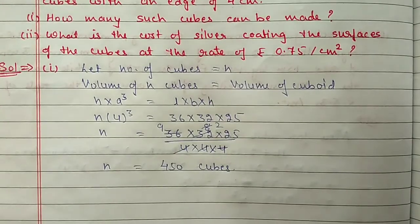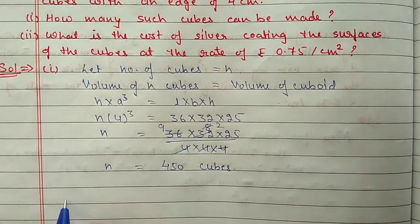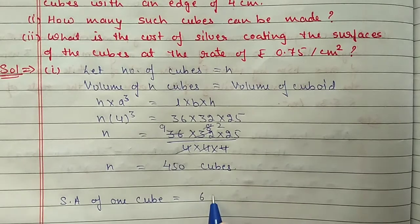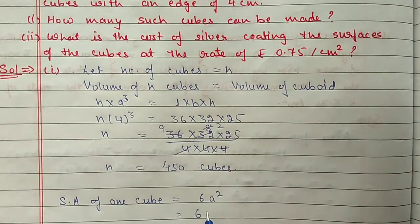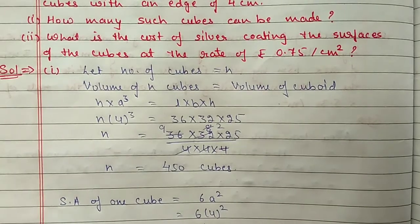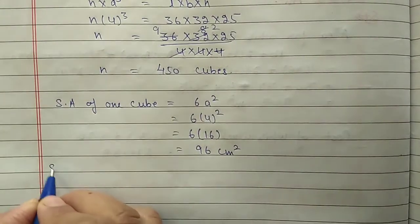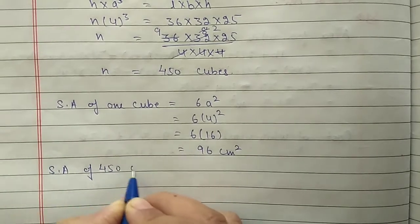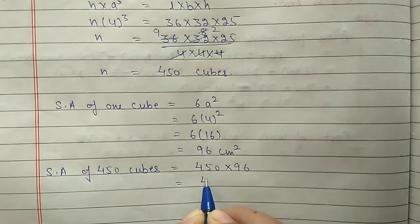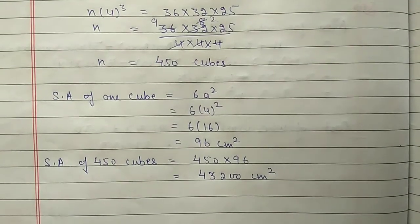For the second part, find the cost of silver coating. Surface area of one cube = 6a² = 6 into 4² = 6 into 16 = 96 cm². Surface area of 450 cubes = 450 into 96 = 43,200 cm². Then we find the cost of silver coating.